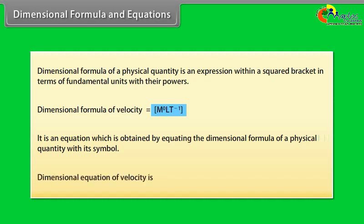It is an equation which is obtained by equating the dimensional formula of a physical quantity with its symbol. Let us take an example: dimensional equation of velocity is V is equal to under brackets M to the power zero L T to the power minus one.